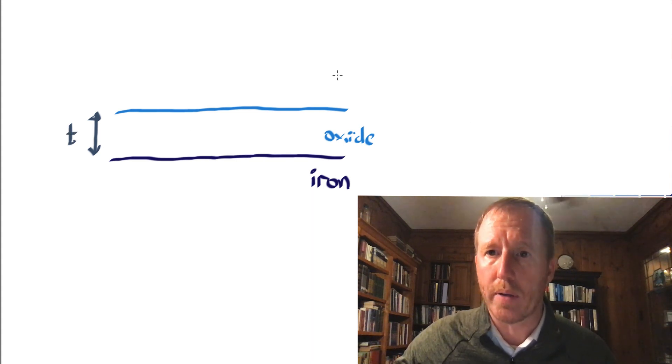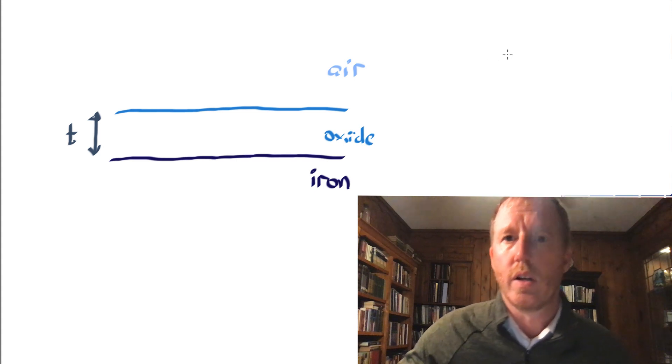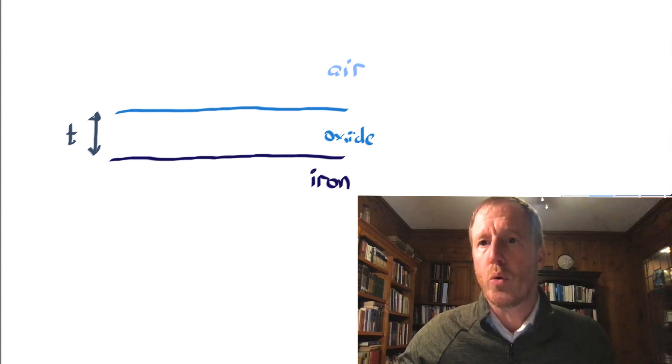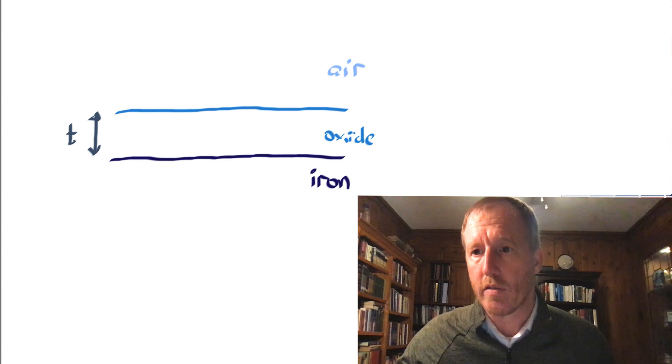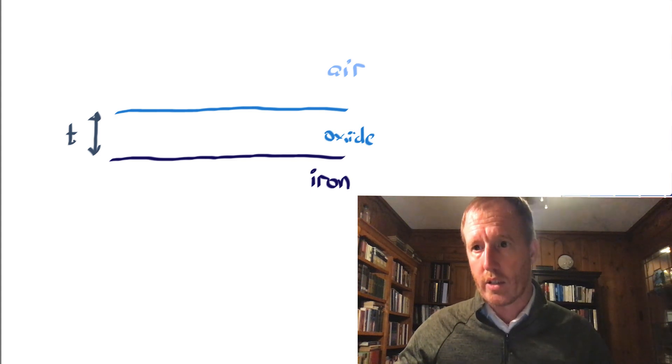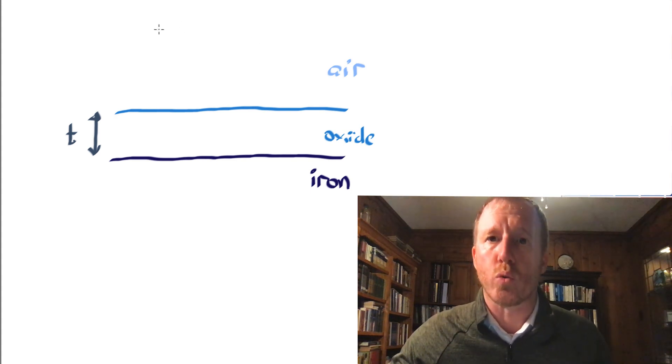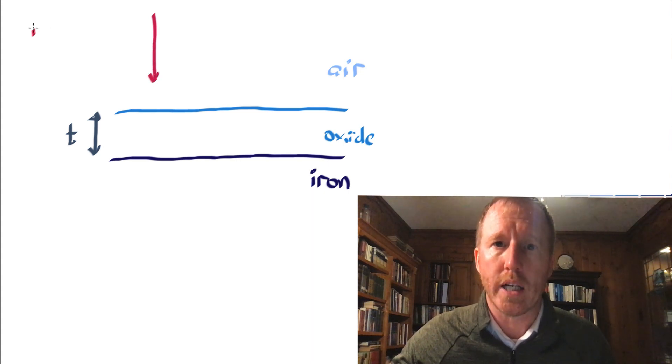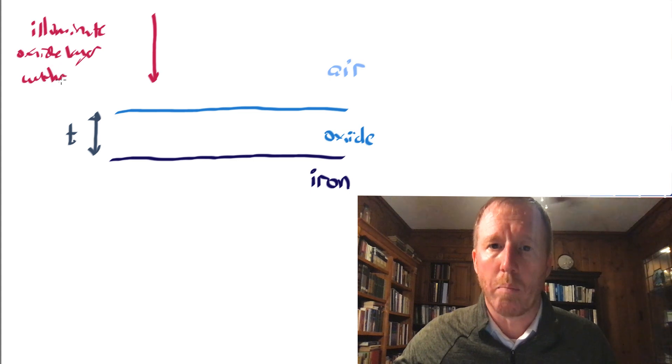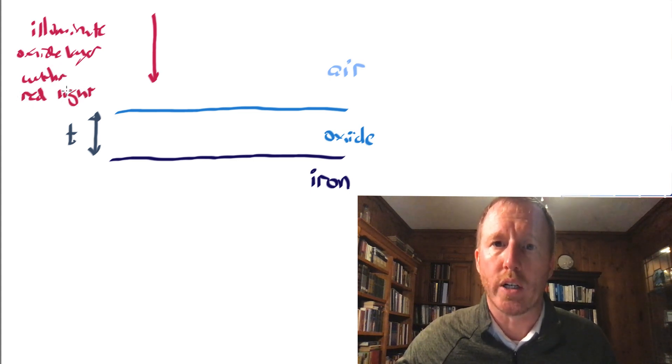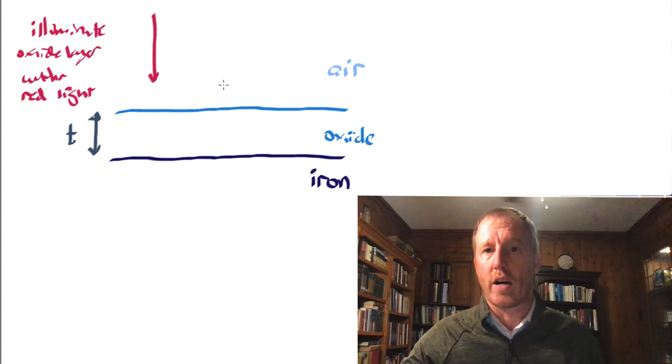And then of course, up here you have air. Now, what happens if you illuminate this from above? So let's start easily or simply by imagining you use red light and you illuminate it from above. So you illuminate the oxide layer with monochromatic or red light. So monochromatic means one color and let's specify that this is red light.